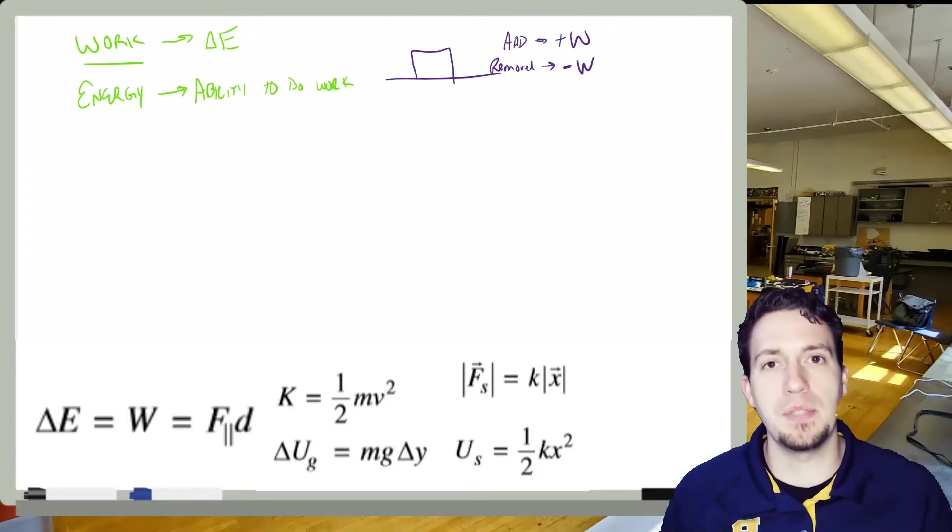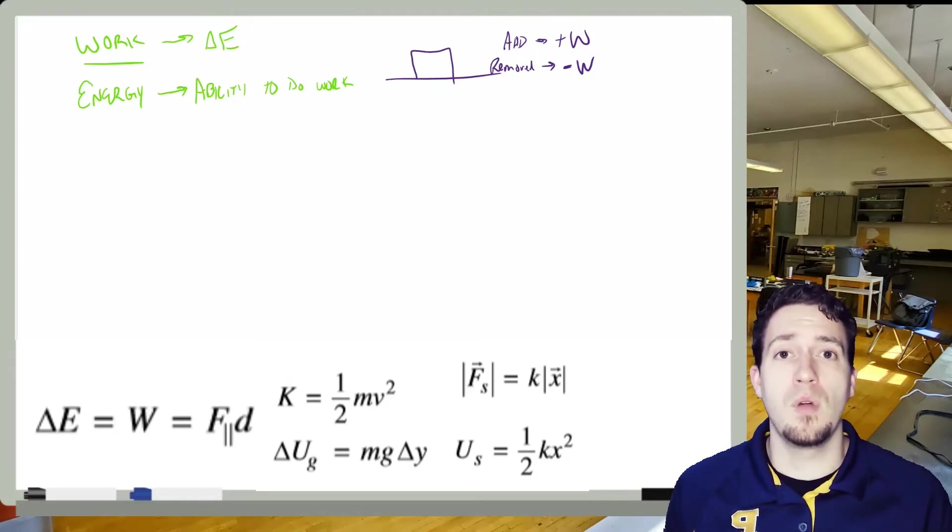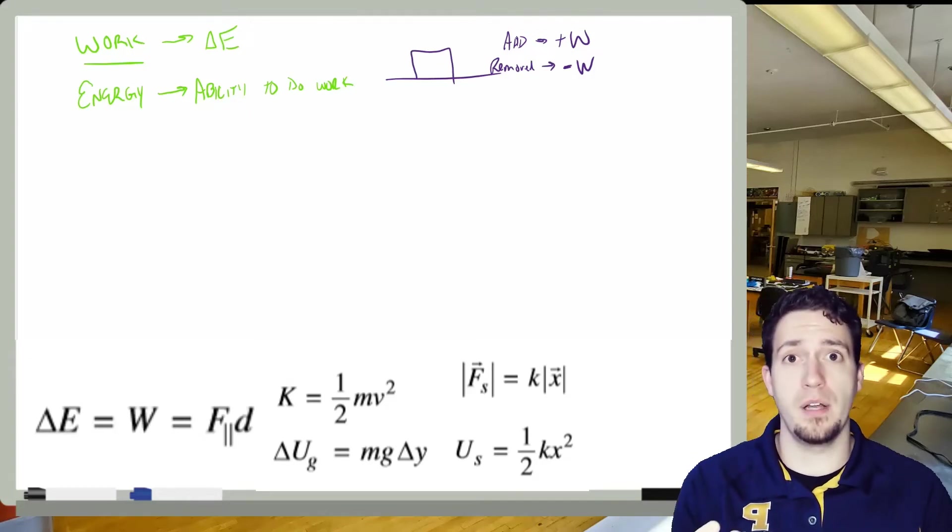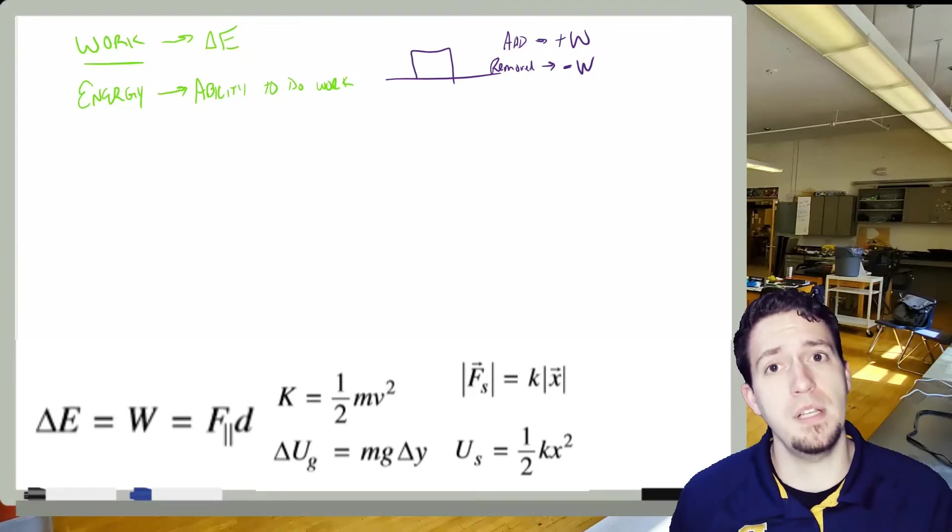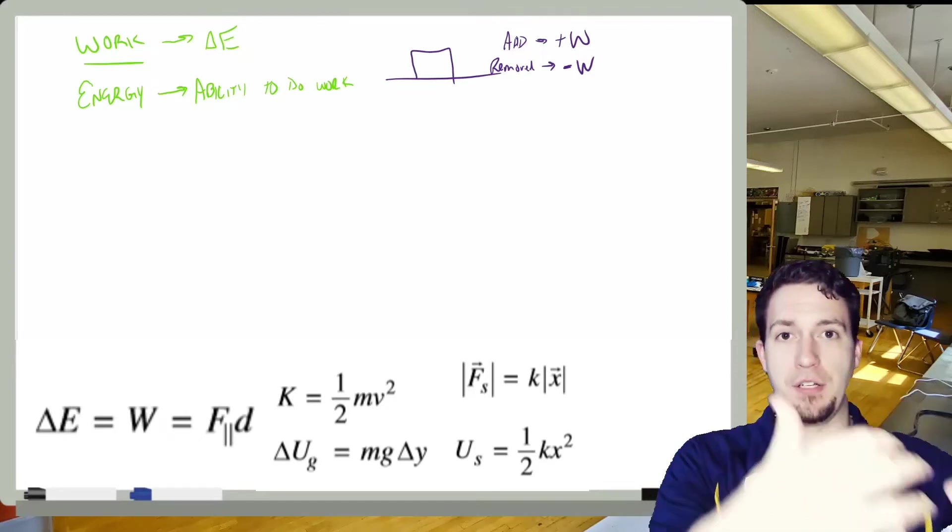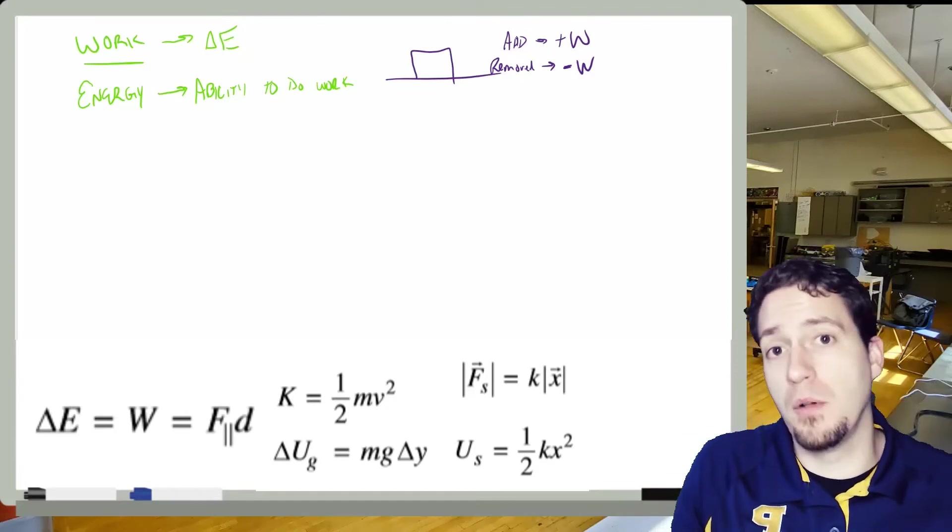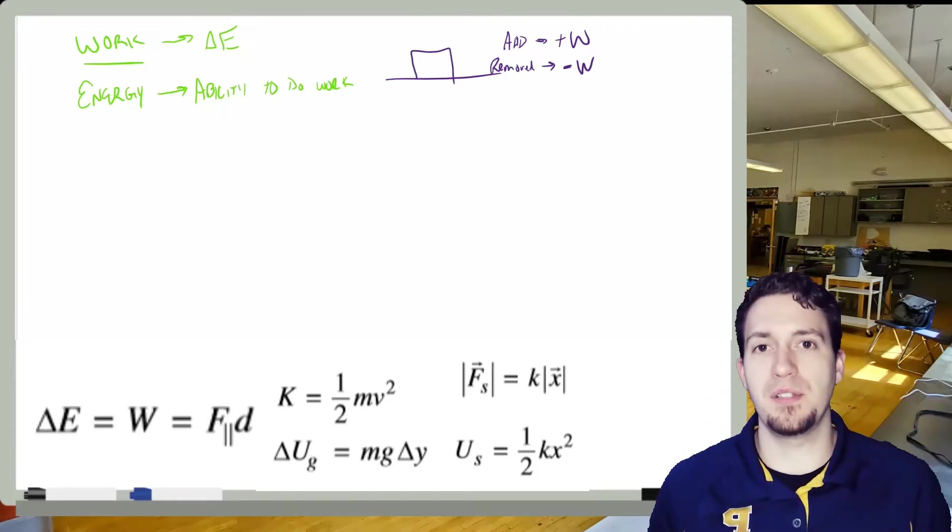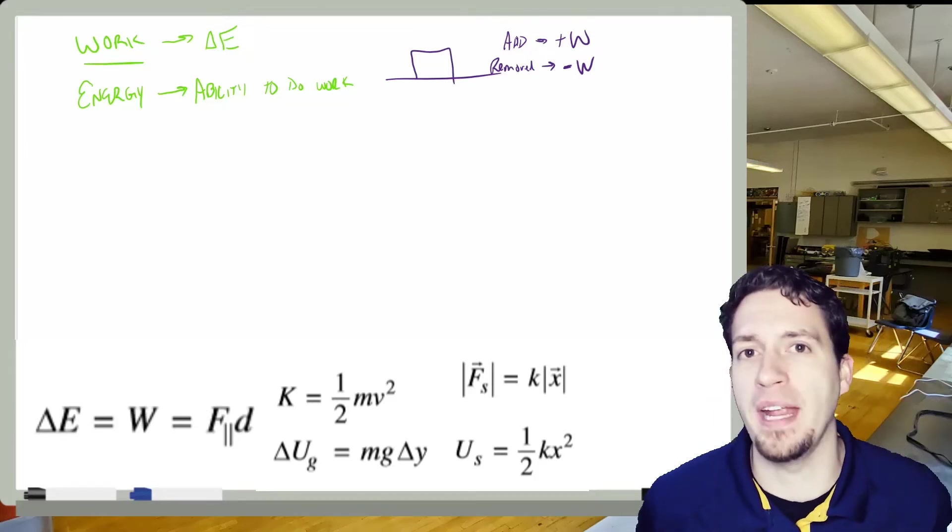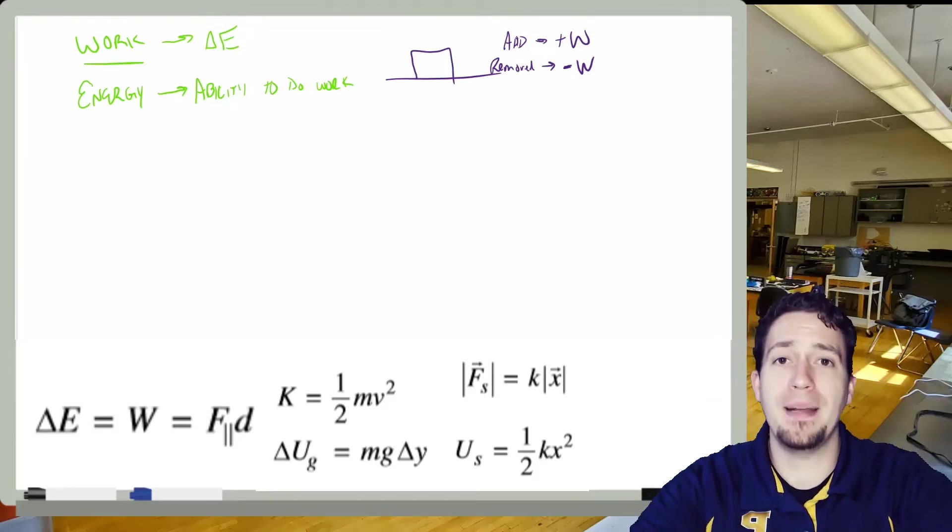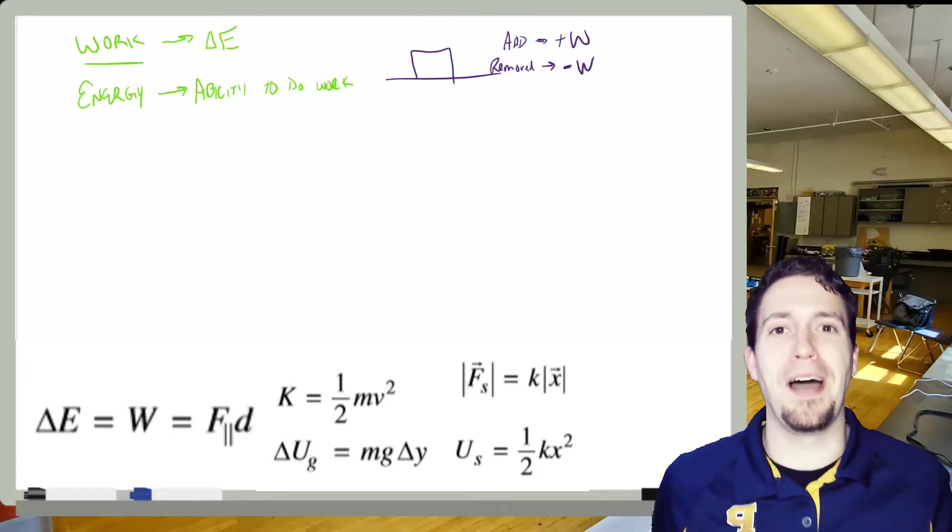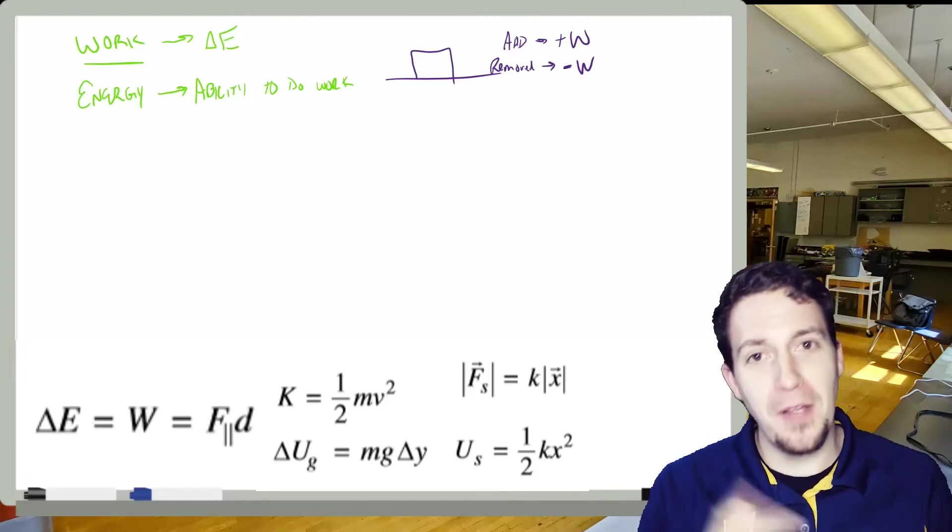But what if we had an object that was actually moving at a constant rate? If you have an object moving at a constant rate, what does that mean? It's not accelerating. So because it's not accelerating, that means I'm adding energy into the system. Friction most likely is removing energy from the system. And those two things are happening at the same rate. And because they're actually happening at the same rate, we get constant motion. Very, very important.